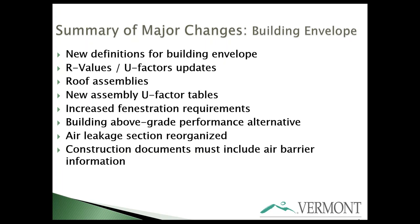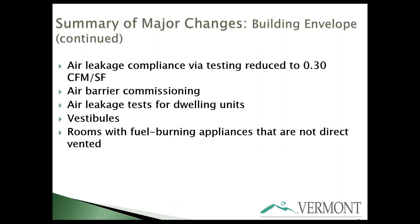We'll cover each topic in more detail, but these are the major updates to the envelope section: new definitions for the building envelope, new insulation values, roof assembly changes, new U-factor tables, fenestration requirements, a new alternative to compliance with the above-grade portion of the envelope. The air leakage section has been reorganized; construction documents must now include air barrier information. Air leakage compliance via testing has been updated to a more stringent 0.30 CFM per square foot.